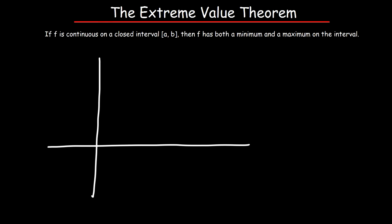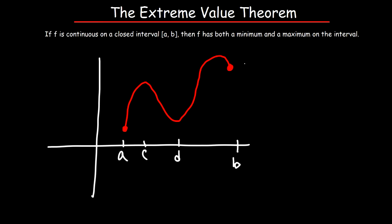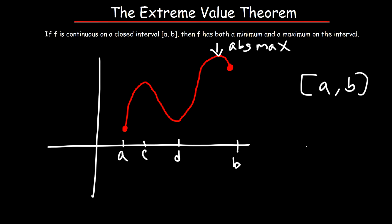Here's another one. Let's say we have a graph that looks like this — identify all of the extrema on this graph. Let's call the points a, b, c, and d. At b, that is not actually the absolute maximum. The absolute maximum is here — that's the highest point on the graph. It's not the endpoint b, but it still exists in the interval a to b since we have a closed interval.